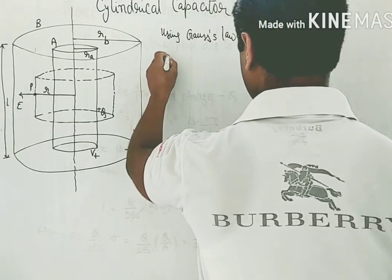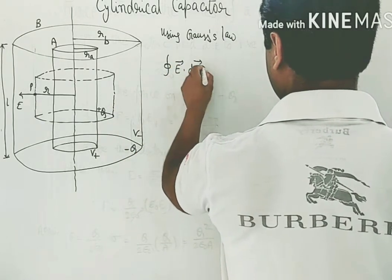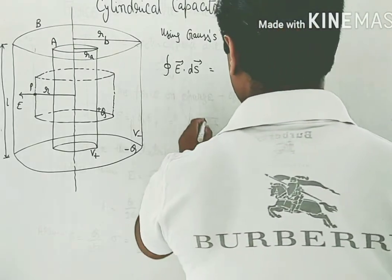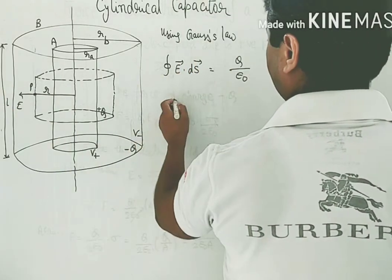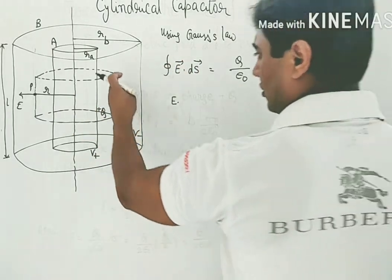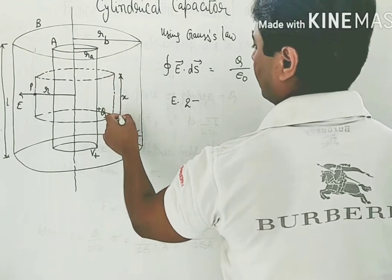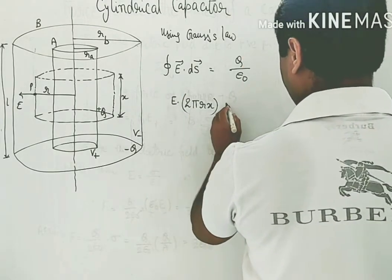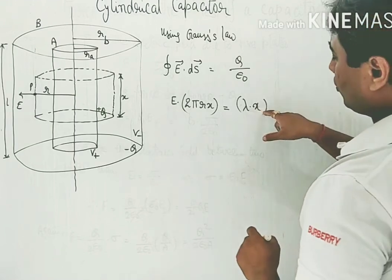Since the electric field is uniform and the area vector are in the same direction, E into the integral of dS over the curved surface gives 2 pi r into x for the curved surface area. The charge enclosed is linear charge density lambda into x, divided by epsilon naught. Further, lambda can be written as Q by l, giving E into 2 pi r into x equals Q by l into x upon epsilon naught.